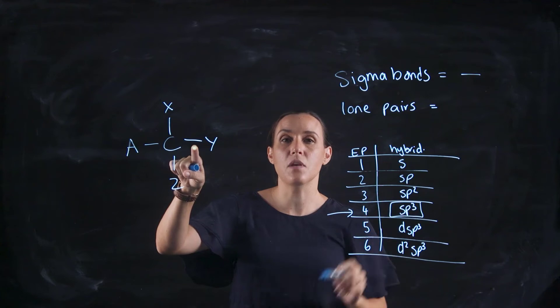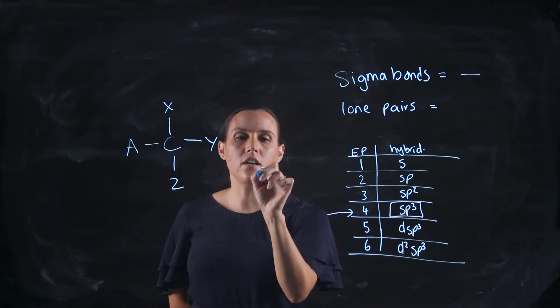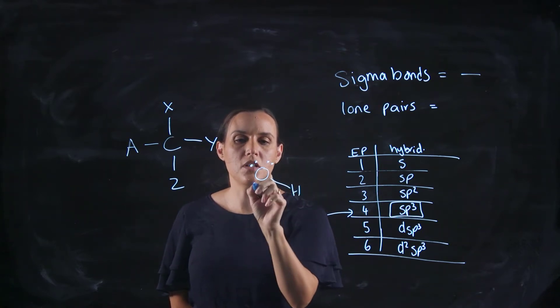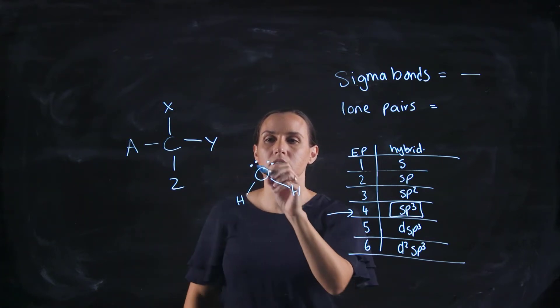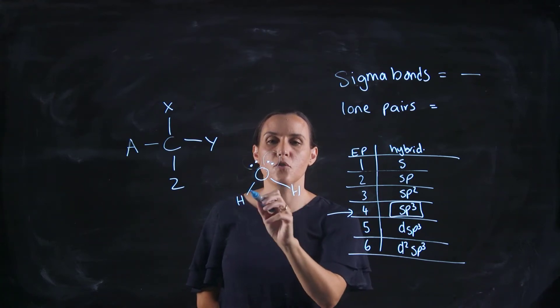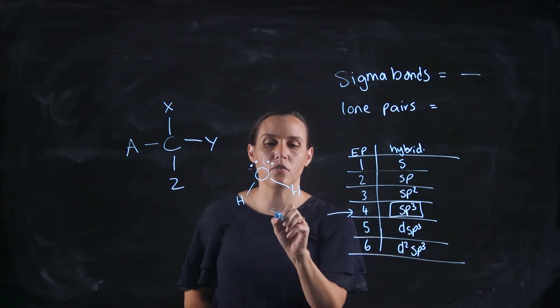If I've got water, so water's got 2 lone pairs on the oxygen, 2 bonding hydrogens. We've got 1 lone pair, we'll put a circle around it so you can see it. 2 lone pairs and 2 bonding, so I've got 1, 2, 3, 4 effective pairs again, so sp3.